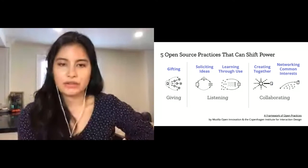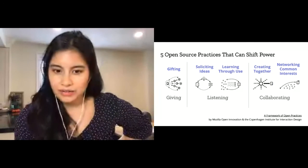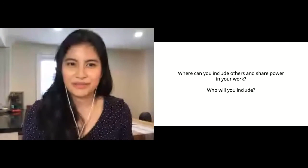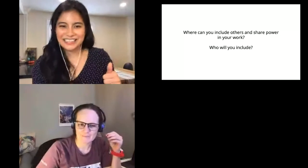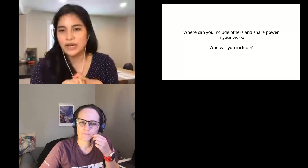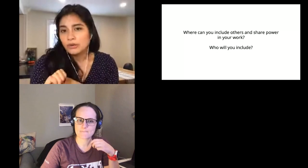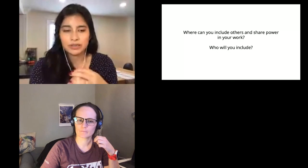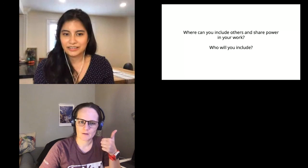As a summary, here are those five open source practices that can shift power. I hope this helps spark some ideas of where you can invite others into your work. But I think now we can go to table view for five minutes. Can someone pop up and confirm that we can still do this? Okay, this is good. Awesome. So just in your tables, think about these two questions: One, where can you include others and share power in your work? And two, who will you include? Is there someone from a marginalized community or some other expert whose voice should be heard here? We'll give you five minutes in your tables, and then we'll show back up here in five. Okay?